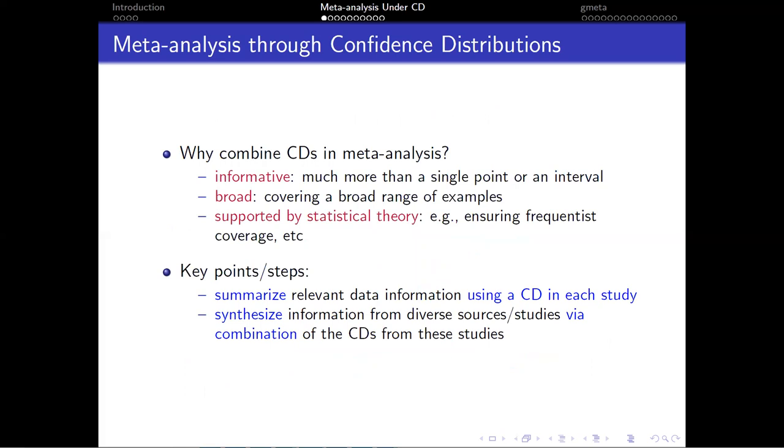In particular, we are using confidence distribution in conducting meta-analysis. There are a few reasons for doing that. CD contains much richer information than a single point estimator or interval estimator, and it also can cover a variety of scenarios or cases with supporting theories. The key steps to construct meta-analysis with CD are very straightforward, at least in concept. First, we summarize information using CD in each study, then combine information from different studies from the combination of those CDs.